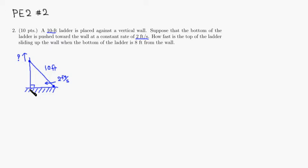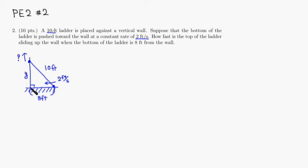So this is what we're trying to find when the bottom of the ladder is 8 feet from the wall — so at this point, this right here is 8 feet. Let's try to give variables to the quantities that are changing. You can see that the distance between the top of the ladder and the ground is changing, so I'm going to call that Y.